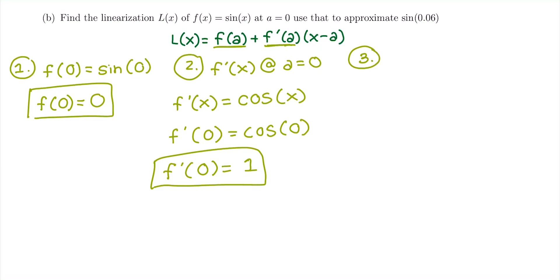And then our third step is to write that into an equation. So our L of x is going to be what we got for f of a, which was 0, plus f prime of a, which is 1, times x minus, and don't forget to put an a here as well, x minus our a is 0.